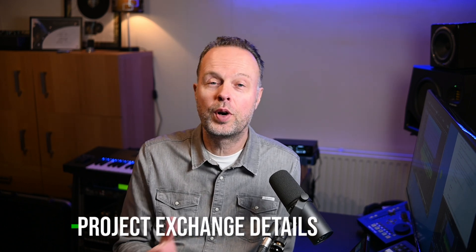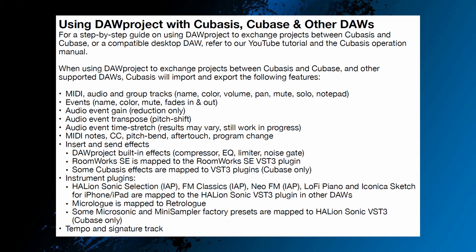Now if you remember how the project sounded in Cubasis, you may notice that there are a couple of differences. That's because there are currently still some limitations with regard to what exactly can be imported and exported in the DAW project format from Cubasis into Cubase 14. Let's have a look at the list that Steinberg provided regarding these limitations. In general, the DAW project interchange between Cubasis and Cubase supports all the features in this list. Even some insert and send effects are supported, and specific effects and instruments in Cubasis are mapped to corresponding ones in Cubase. But of course some plugins and virtual instruments will not transfer over one-to-one. In that case, Steinberg advises to just bounce the tracks to audio, which will transfer over one-to-one.